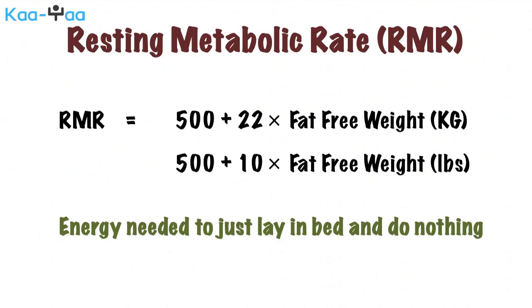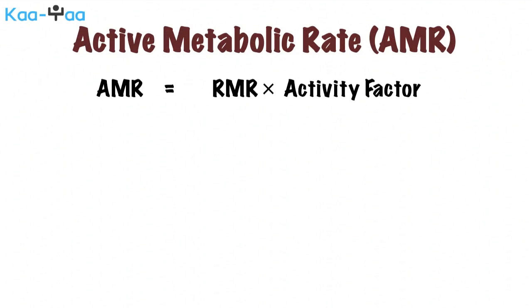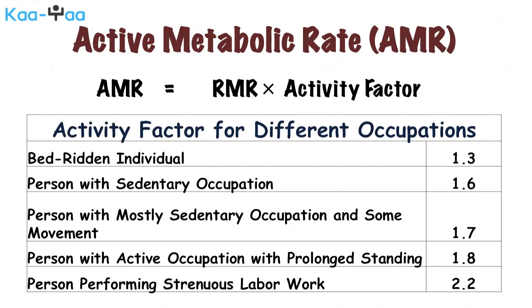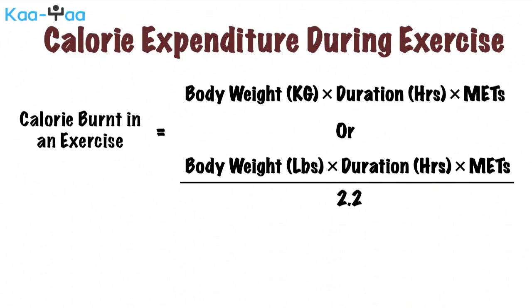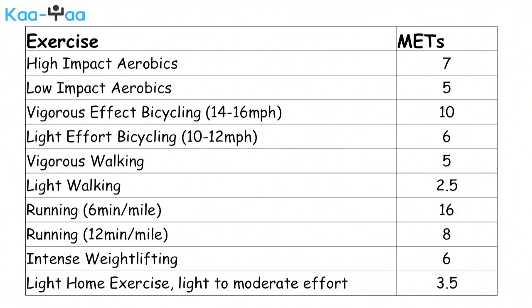Most of us do not just stay in bed — we perform daily activities, which all require energy. You can calculate your active metabolic rate, or AMR, by multiplying your resting metabolic rate with an activity factor. Shown here are the factors you need to multiply your RMR by based on your level of activity. Keep in mind that this is the daily calorie need outside of calories burned during exercise. Finally, using this formula you can calculate the calorie expenditure during exercise, where METS is a metabolic multiplier applied to any exercise based on how intense it is. Shown is the list of METS for different types of exercises.